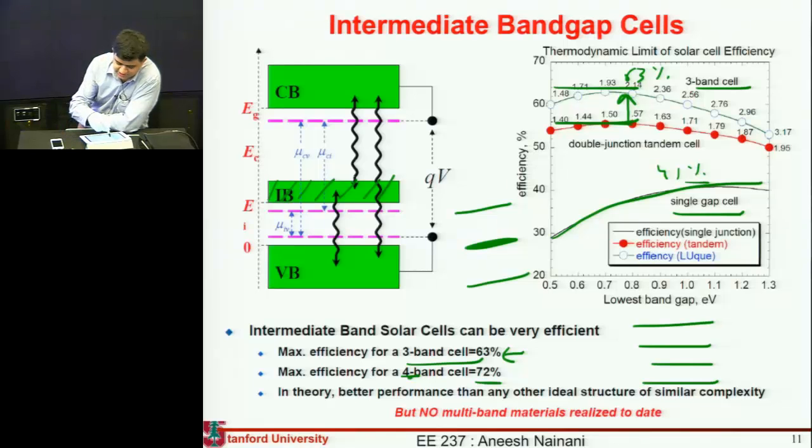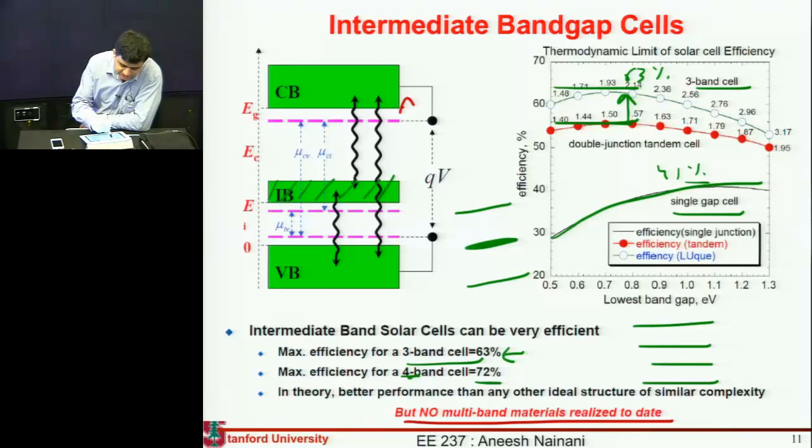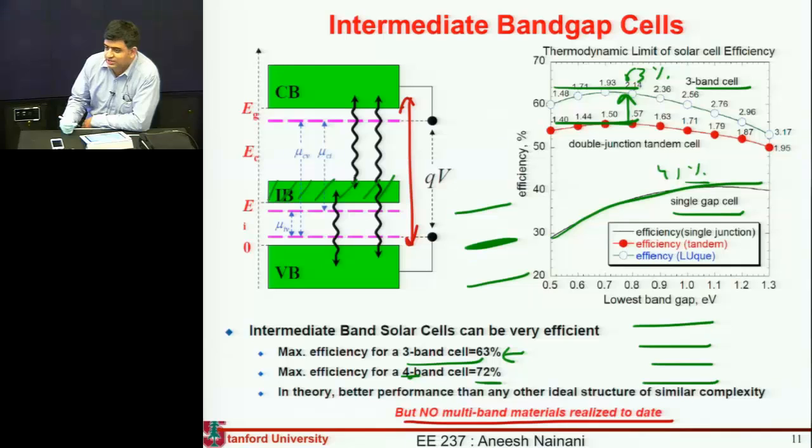Now, the catch with this is outlined in this footnote here. This has been around in theory for a while, and I'll show you some methods which people are using to make this intermediate bandgap. But there's no natural semiconductor. At least I haven't heard of any natural semiconductor which has this intermediate band with multiple of these bands. Typically when we think about bandgap, the main idea is that you have this forbidden region where you don't have any bands in between, right? So it's trying to violate one of the fundamentals of crystalline semiconductors, that you don't have bands in between your bandgap, right?